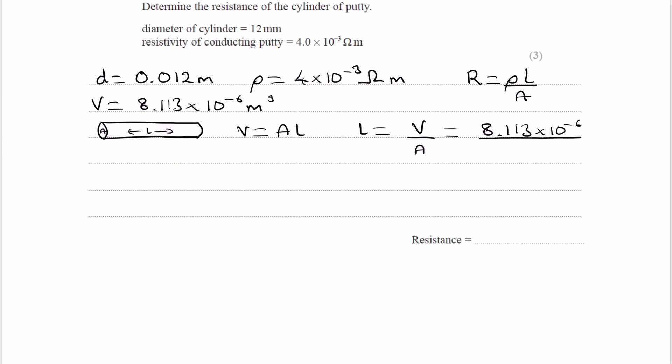So 8.113 times 10 to the minus 6, all divided by the area. So to work out the area, we know area is πr squared. We know that radius is diameter divided by 2. So we can put this into our calculator to work out the area, with d being 0.012. And we end up with 1.131 times 10 to the minus 4 meters cubed.